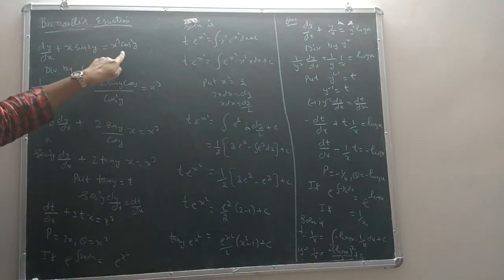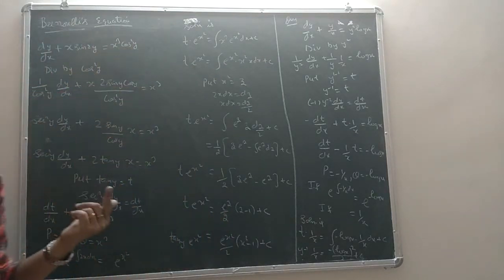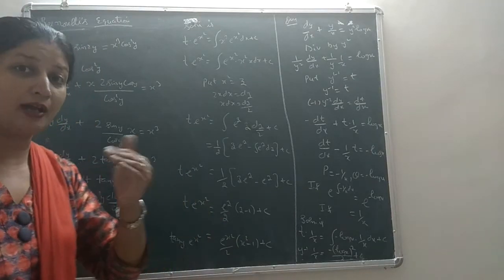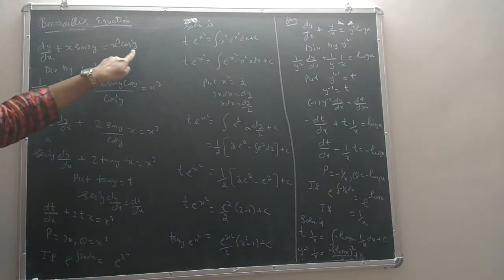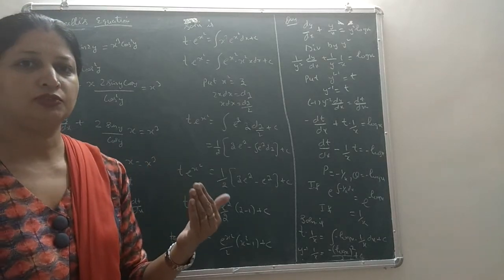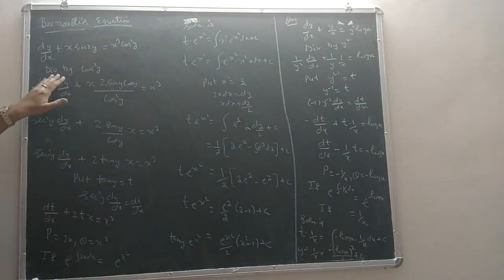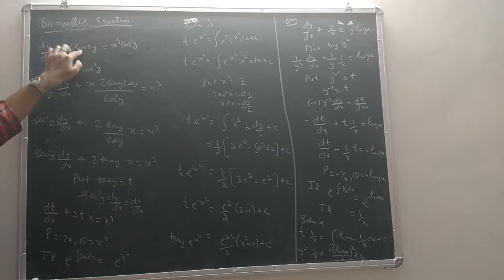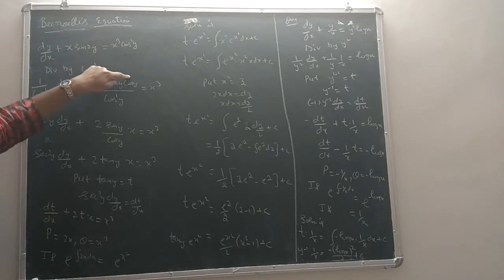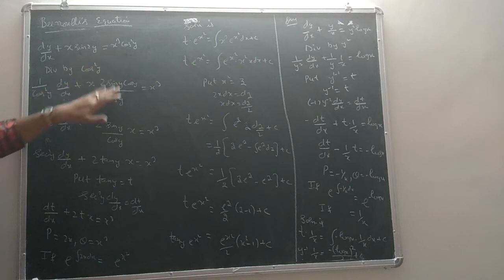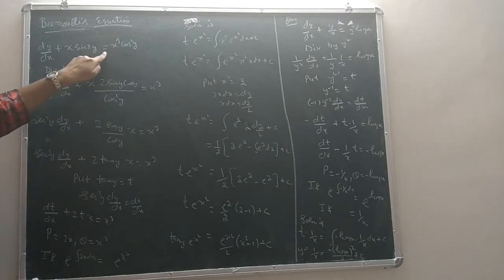We divide through by cos²y. So after dividing by cos²y, and using the identity sin(2y) = 2·sin(y)·cos(y), the left-hand side becomes dy/dx plus x·(2·sin(y)·cos(y)) divided by cos²y, which equals x³.